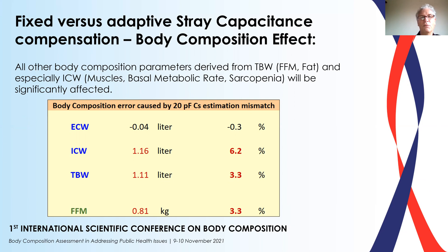You can see from this table that a compensation error of just 20 picofarads — and a typical subject could vary anywhere between 10 and 60 picofarads — means that with a 22 picofarad fixed compensation, it's not difficult to see that you'd have quite large errors. The intracellular water has a 6.2% error just from having a mismatch. Yet as an end user, you wouldn't realize it, you wouldn't know that existed. Total body water shows a 3.3% error, and fat-free mass a 3.3% error.